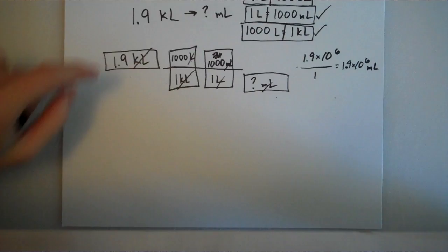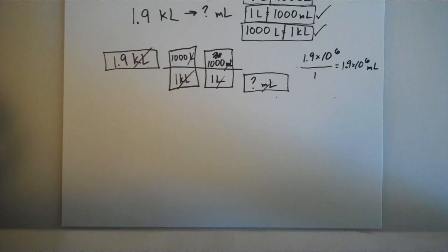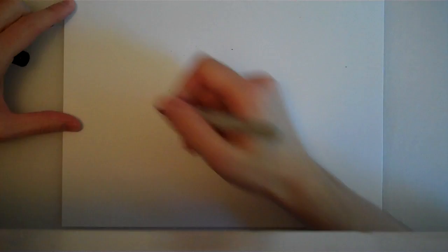So, 1.9 kiloliters is the exact same thing as 1.9 times 10 to the 6th milliliters. Make sure you know your metric conversions because we use those again and again. But it doesn't have to be any kind of unit that you're familiar with. For example, we could do something kind of bizarre.